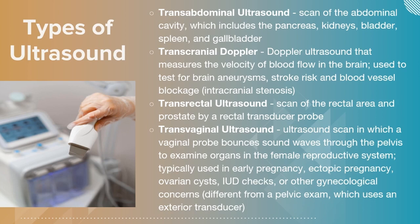Transcranial Doppler measures the velocity of blood flow throughout the brain and is used to test for brain aneurysms, strokes, blockages, and particularly intracranial stenosis. Transrectal ultrasounds can be used to rule out prostate concerns; most of the time it's for prostate cancer rule-out. Transvaginal ultrasounds use sound waves bouncing off organs and can be used to check IUD position, gynecological pain, abnormal uterine bleeding, pelvic pain, ovarian cysts, ectopic pregnancy, fallopian tubes, and many other indications.